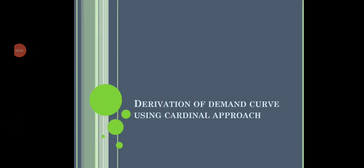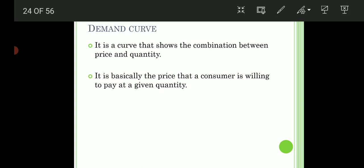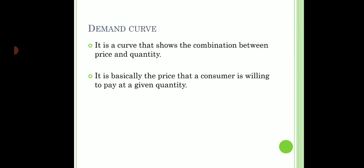In this video we are going to derive the demand curve using the cardinal approach. A demand curve is a curve that shows the combination of price and quantities. It basically shows those quantities where the consumer is satisfied — the quantity which a consumer is ready to purchase at a given price. So any point on a demand curve means the consumer is at equilibrium.